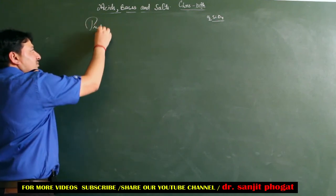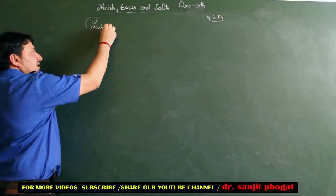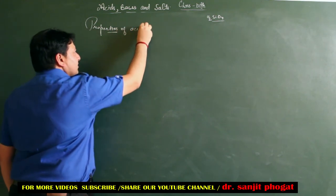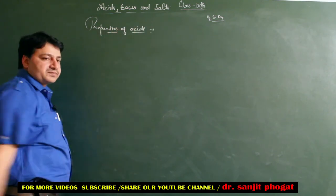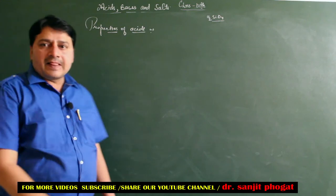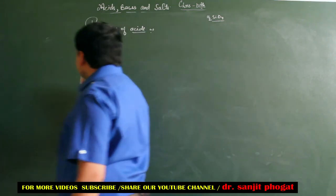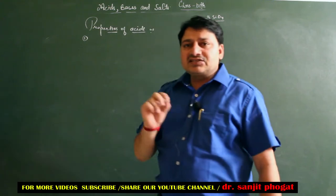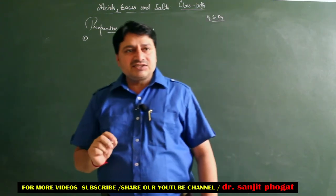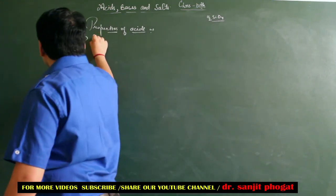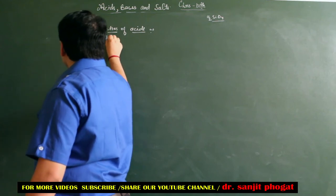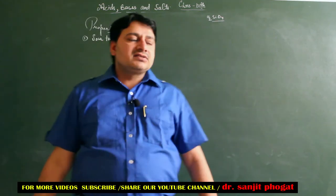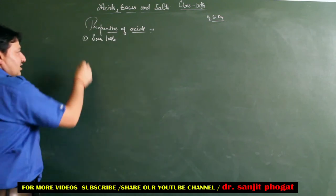अब हमने Summarize करना है कि Acid की कौन-कौन सी Properties हैं - Properties of Acids। सबसे पहली Property वही है जहां से हमने शुरू किया था - Acids कट्टे होते हैं। पहली Property है Sour Taste - The Acids Have Sour Taste।